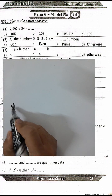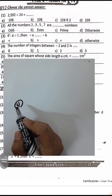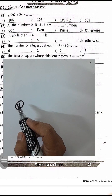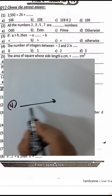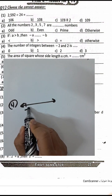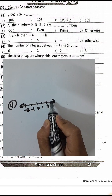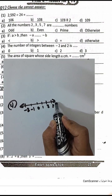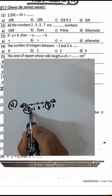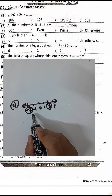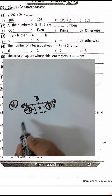Question number 4: The number of integers between negative 2 and 2. We have negative 1, 0, and 1 — that gives us three numbers.